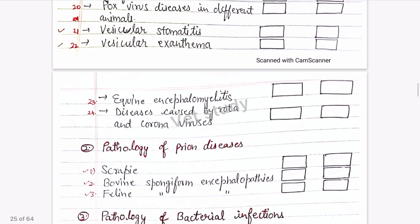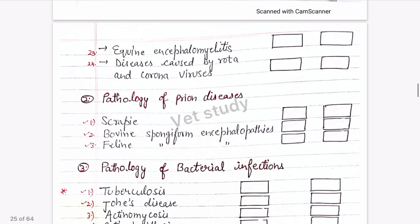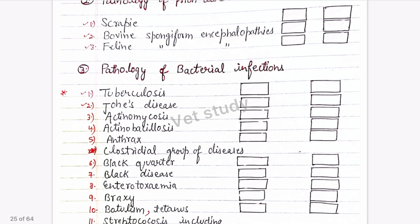Swine influenza, rabies — important topic. Canine distemper is an important topic — note the inclusion bodies in canine distemper and rabies. Infectious canine hepatitis is not so important. Canine parvovirus is very important. Pathology of prion disease is very important — the main disease is bovine spongiform encephalopathy (BSE). Also tuberculosis and paratuberculosis are important.